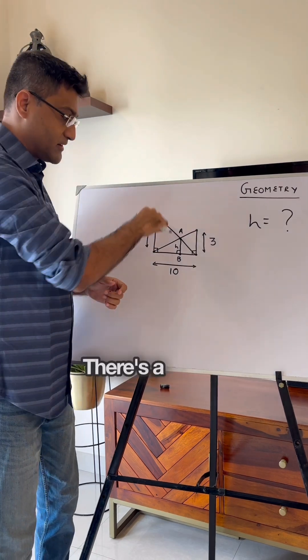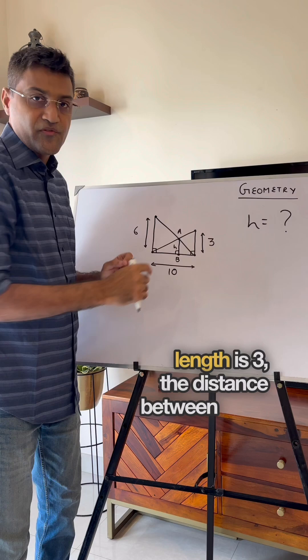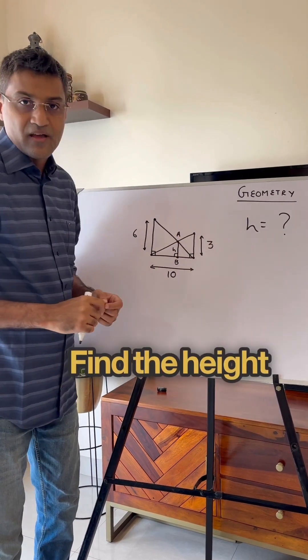The question is as follows. There's a vertical pole whose length is 6, another one whose length is 3. The distance between them is 10. Find the height h.